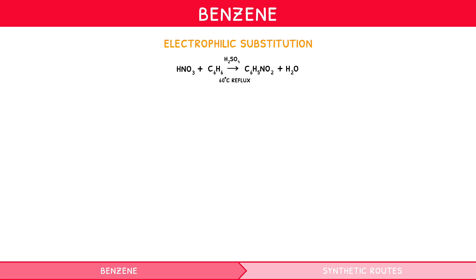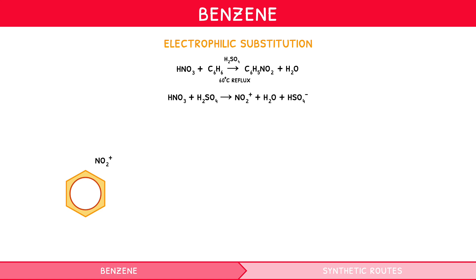The electrophile for this reaction is the nitronium ion, NO2+, formed from the reaction between nitric acid and sulfuric acid: HNO3 plus H2SO4 goes to NO2+ plus H2O plus HSO4−. Learn this, as you can be asked for it in the exam.